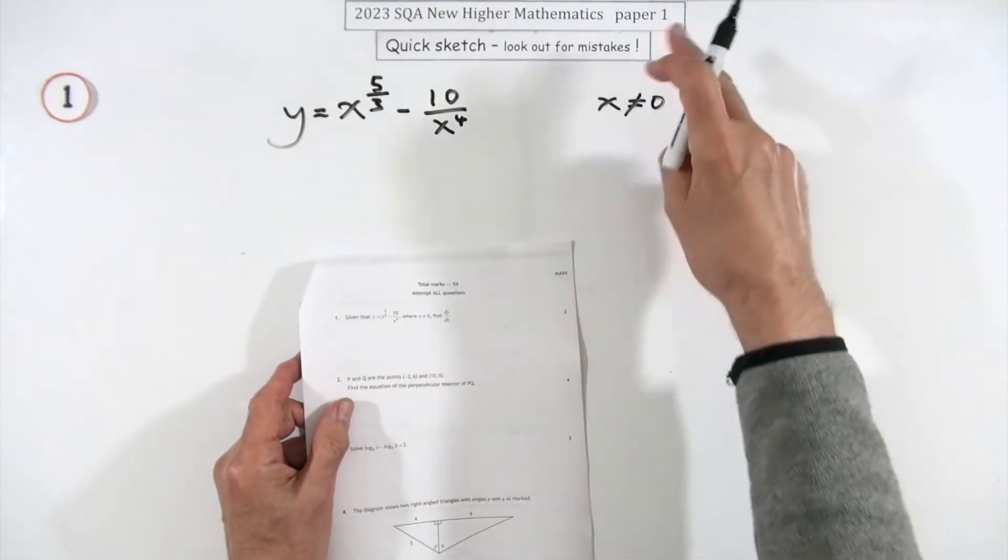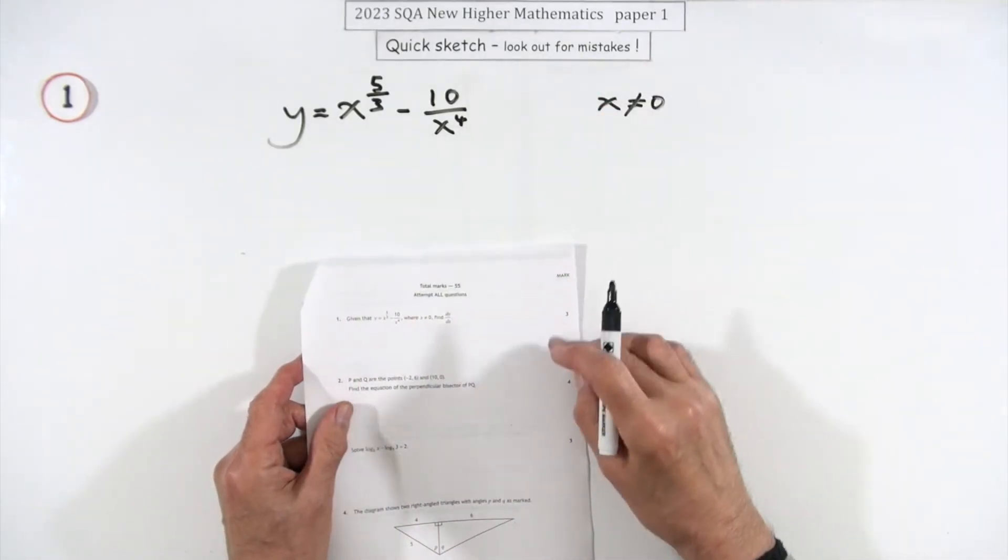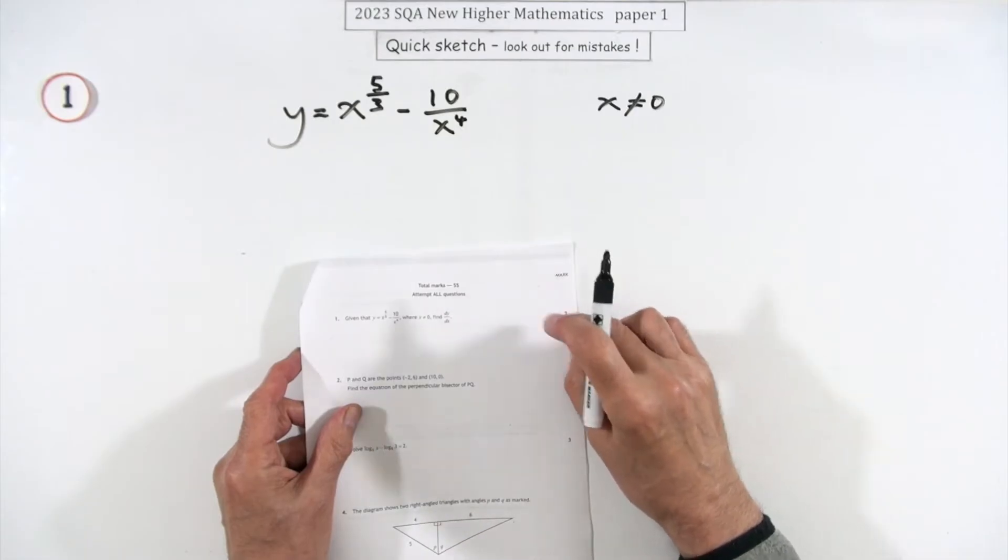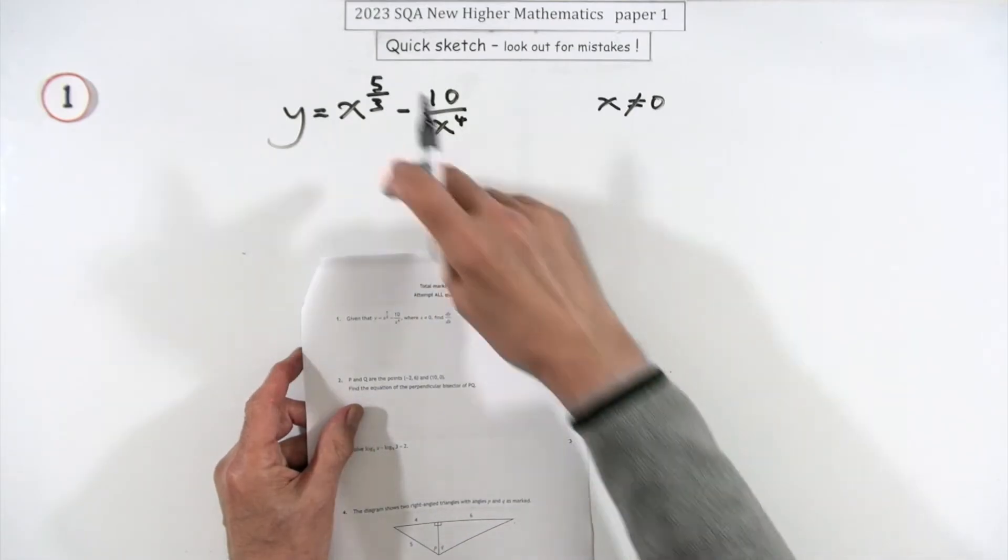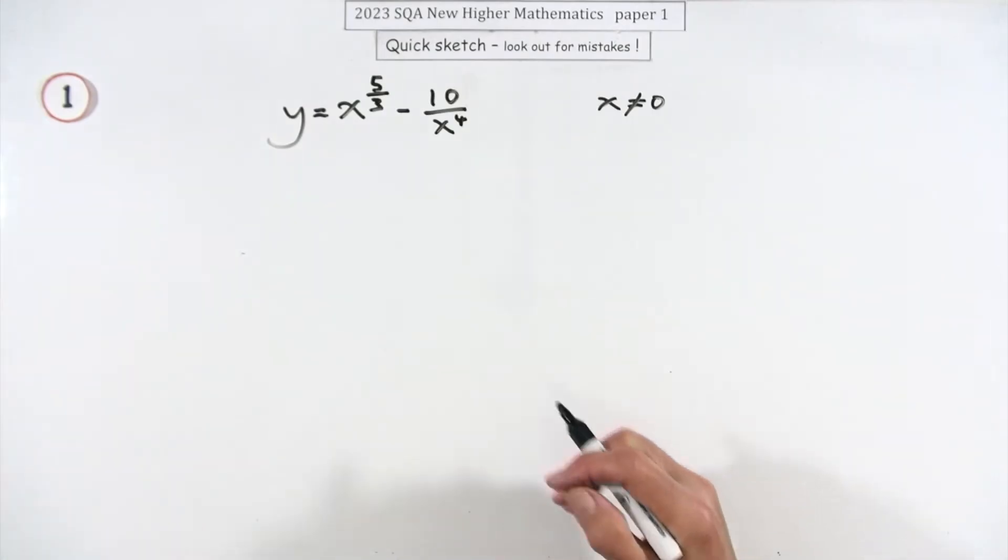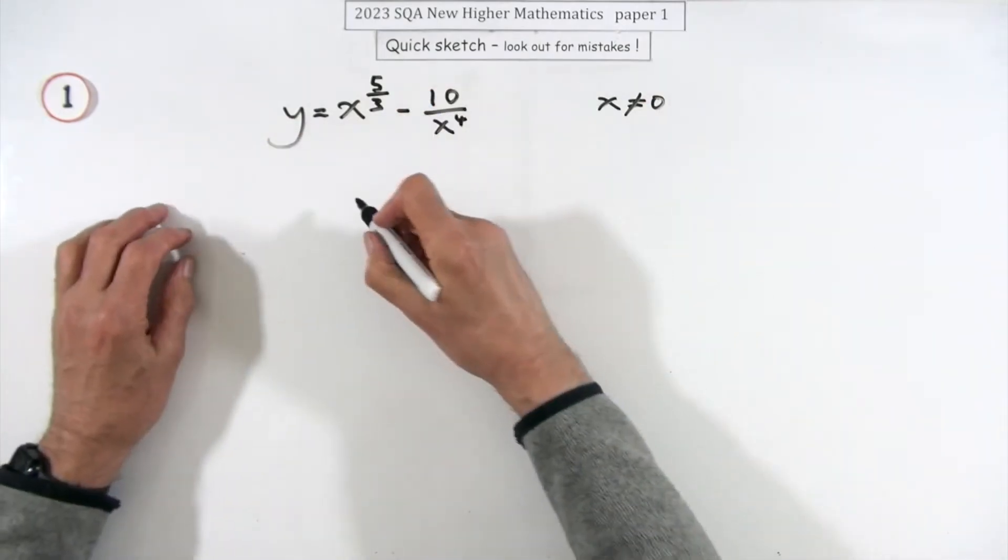So number one then, the first question in paper one of the 2023 Higher Maths, three mark question here for differentiate. You've got these indices here which is exactly what you want because you can multiply by the index.